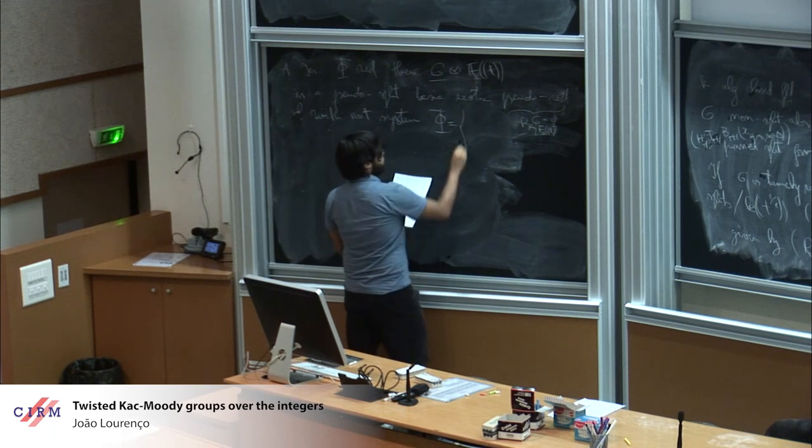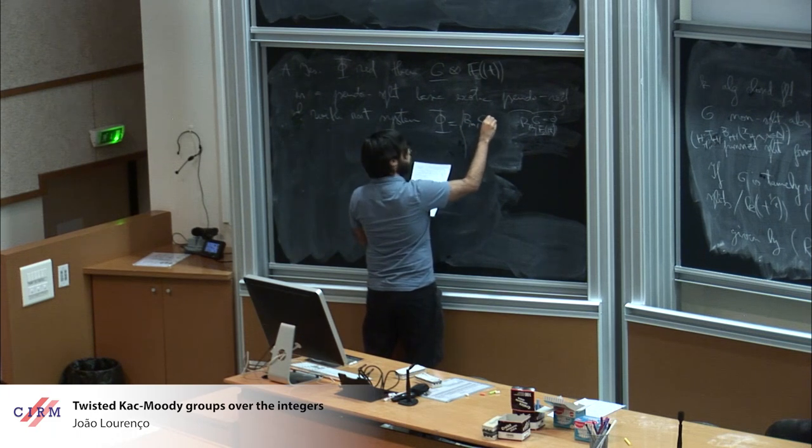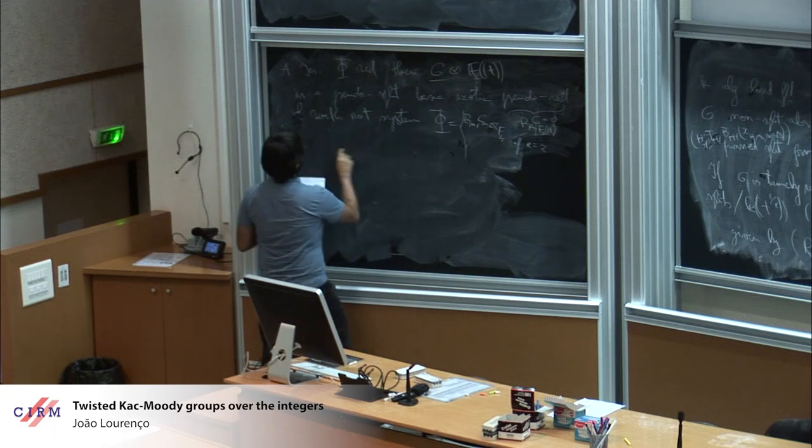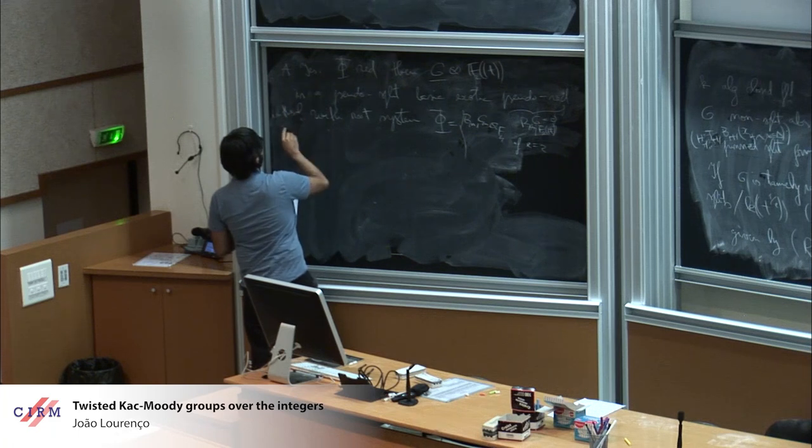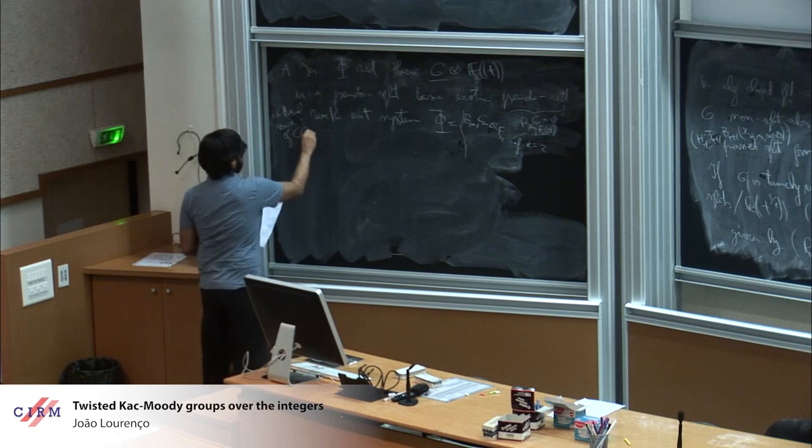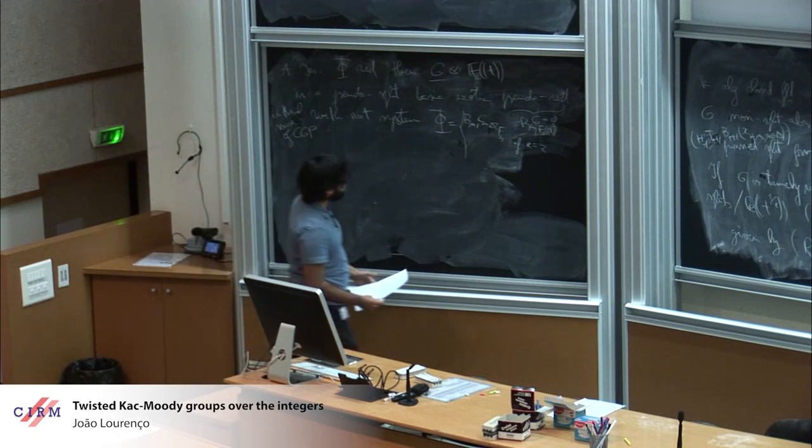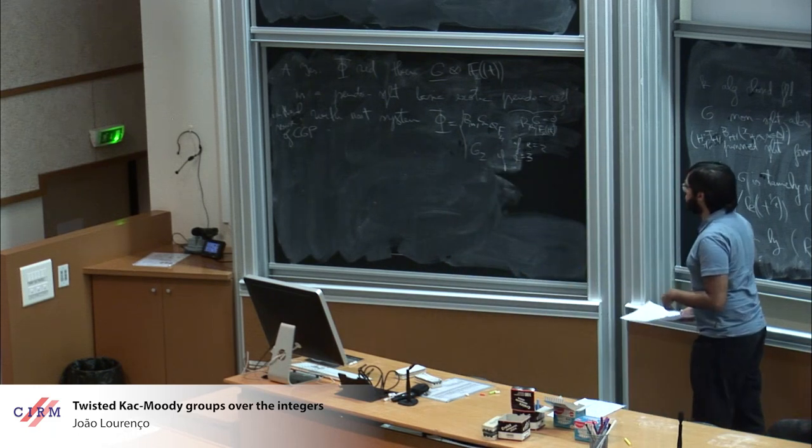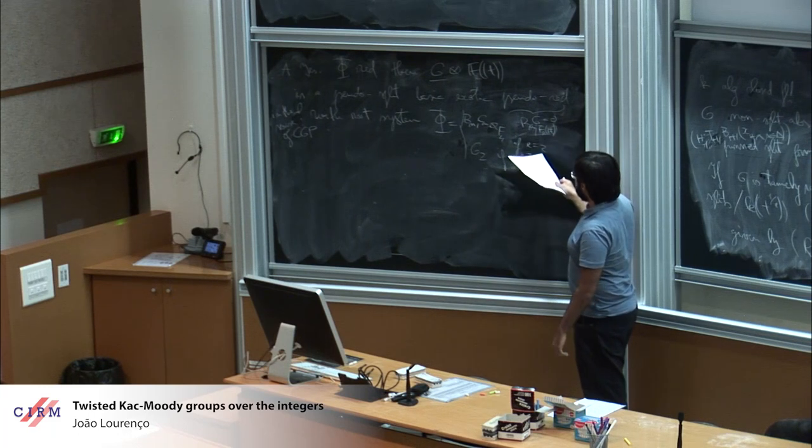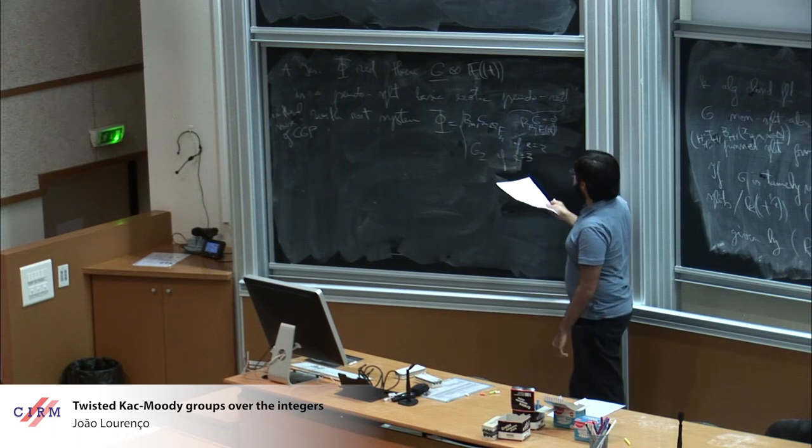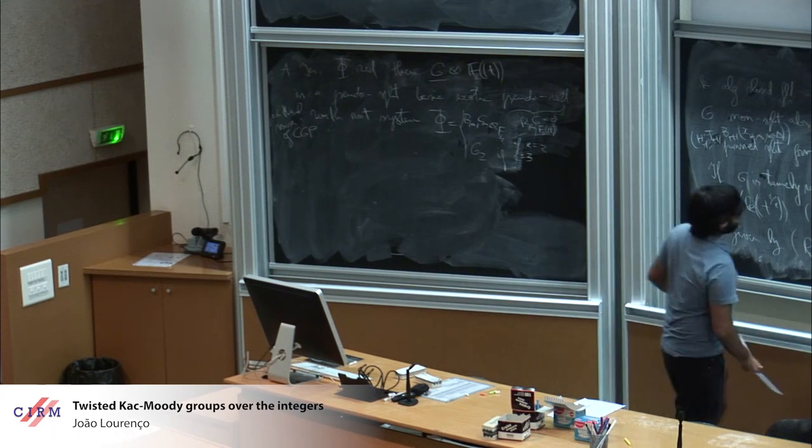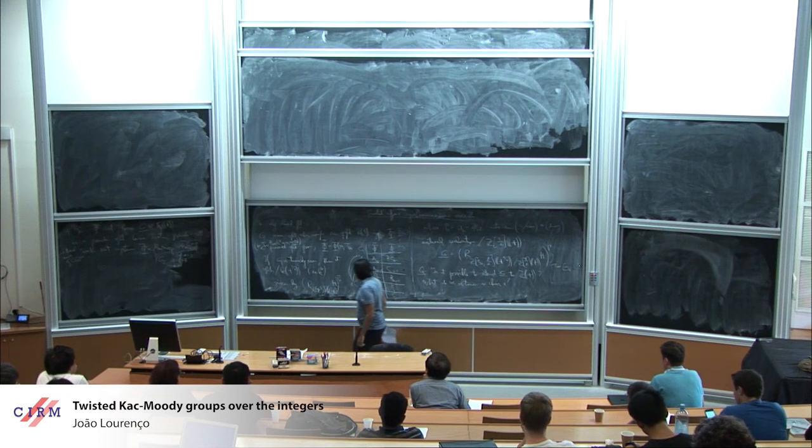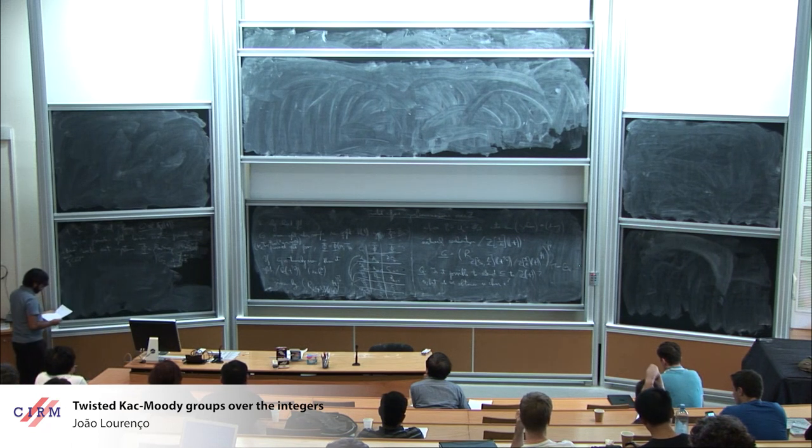This does not amount to the usual condition of reductivity because the unipotent radical may be different from the geometric unipotent radical, because the extension is imperfect. The types of root systems that you can get are the following. I should say that all these words are in the sense of the main reference, which is Conrad, Gabber, and Prasad.